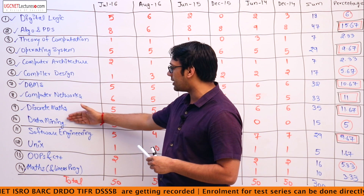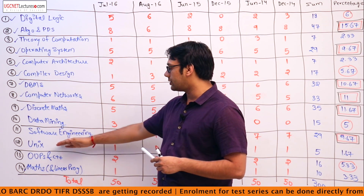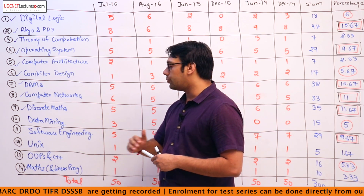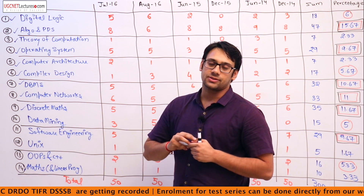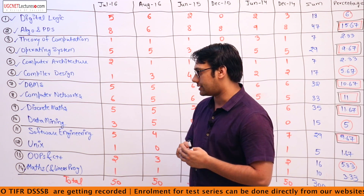The subjects that are in UGC but not present in GATE are data mining, software engineering, UNIX, and OOPS and C++.